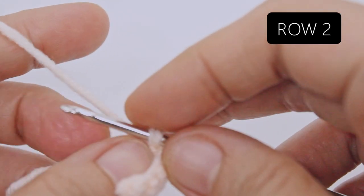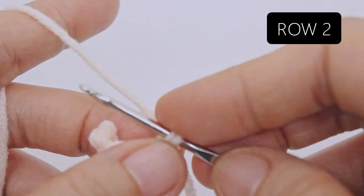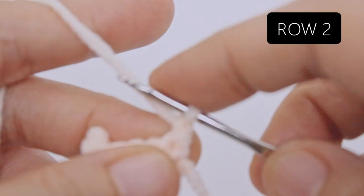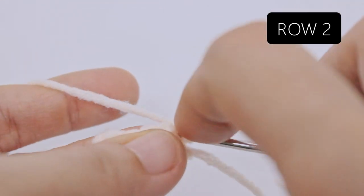Turn your work. Row two: chain one, single crochet in every stitch in the row.